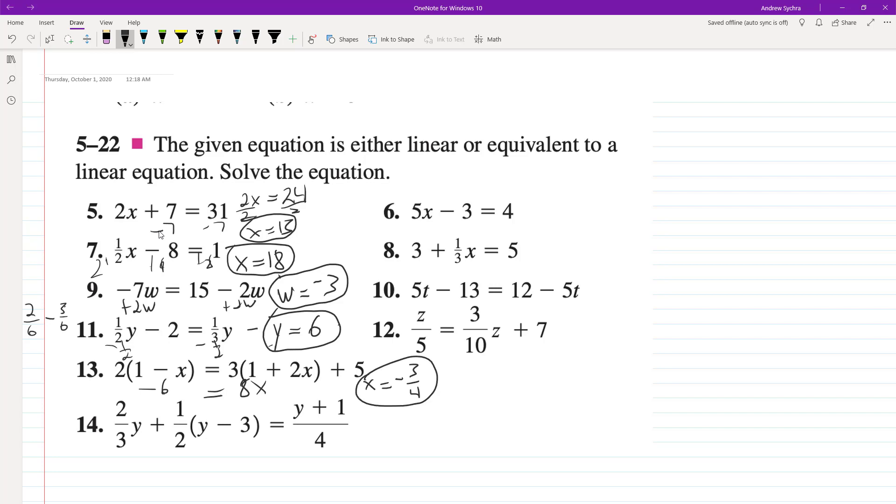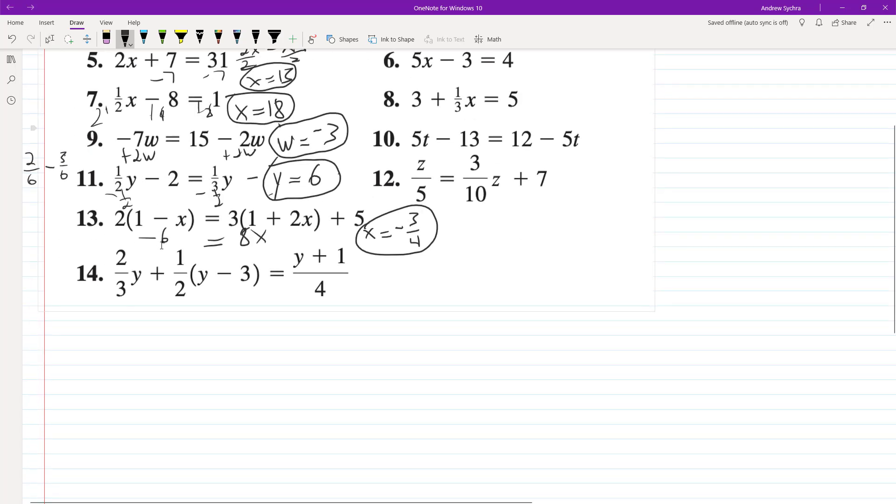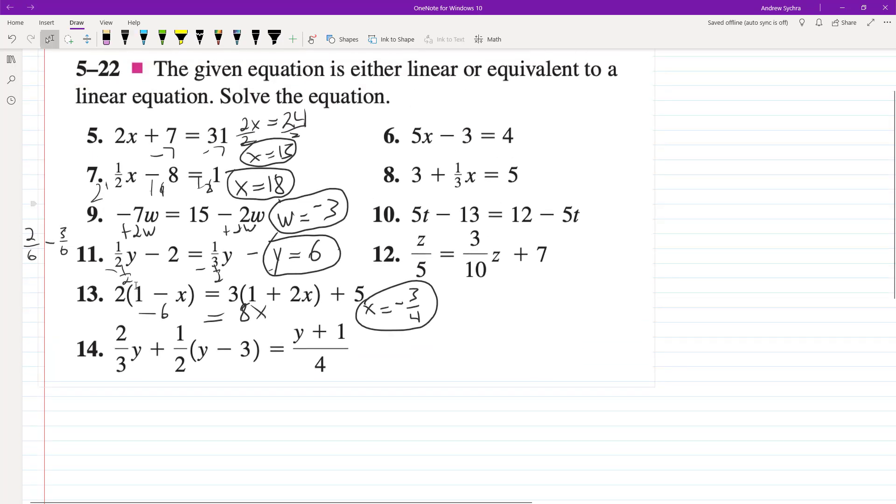Alright, so for here, 2 thirds. I'm doing it on the odd ones right now. Distribute this. So 2 thirds y plus 1 half y minus 3 halves equals y plus 1 over 4. Common denominator is going to be 6, looks like 12. They could be other ones, but we'll use 12.